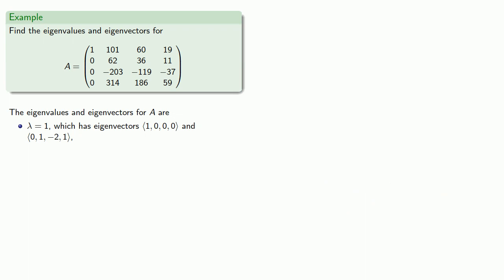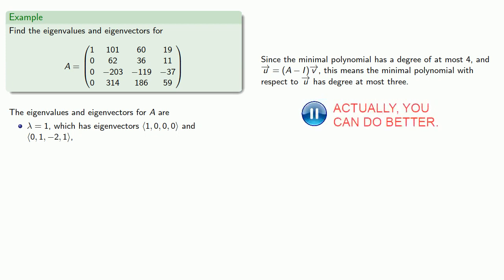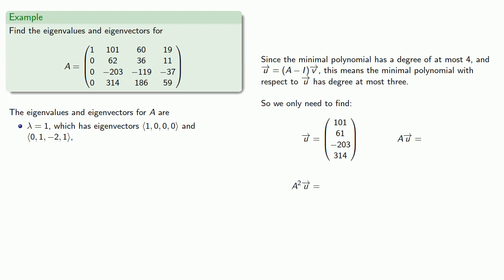And we know something else. Since the minimal polynomial has a degree of at most 4 and u is already (A minus I) times v, this means the minimal polynomial with respect to u has degree at most 3. And what this means is that we only need to find u, Au, A squared u, and A cubed u. So we find those.